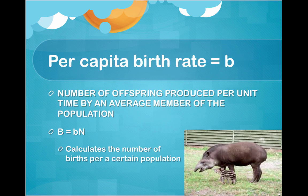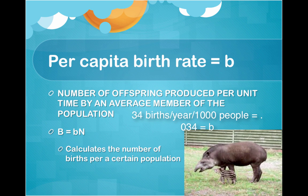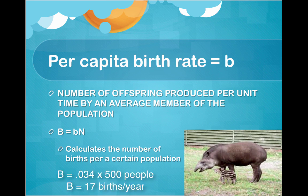Per capita birth rate, which is lowercase b, is the number of offspring produced per unit time by an average member of a population. For example, 34 births per year per 1,000 people equals 0.034, which equals b. Capital B is therefore equal to lowercase b times N. For example, if capital B equals 0.034 times 500 people, then capital B equals 17 births per year.